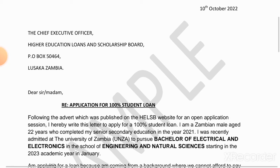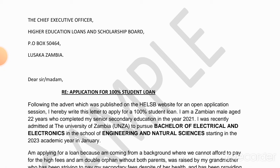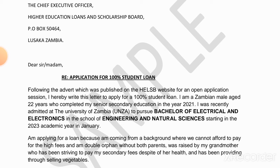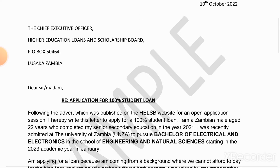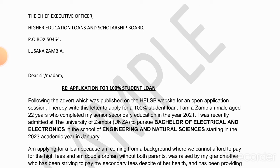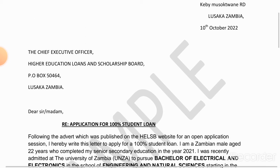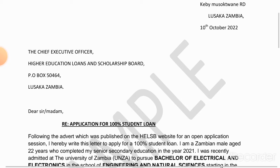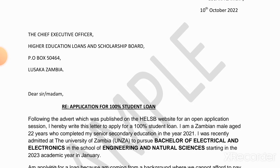After writing all the addresses, the next thing is to write the salutation: 'Dear Sir or Madam.' We use this because we do not know who will attend to our application letter — whether it's a madam or a sir — so we write 'Dear Sir or Madam.'